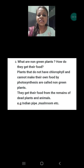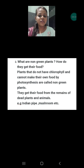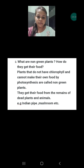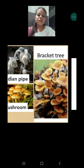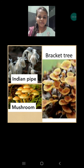Plants that do not have chlorophyll and cannot make their own food by photosynthesis are called non-green plants. They get their food from the remains of dead plants and animals. Examples are: Indian pipe, mushroom, and bracket fungus. These are examples of non-green plants.